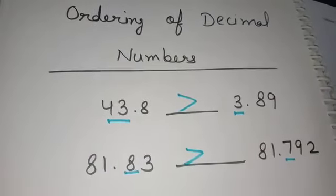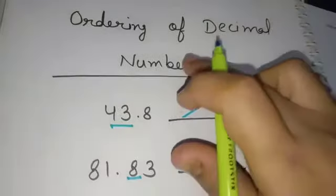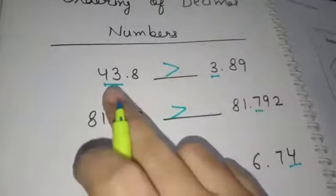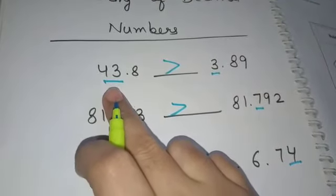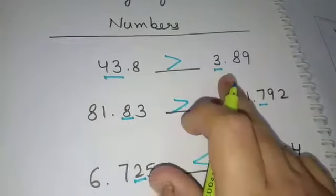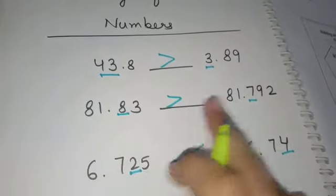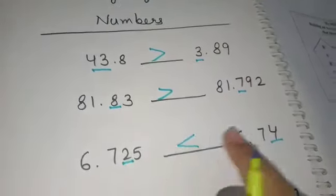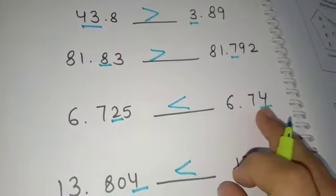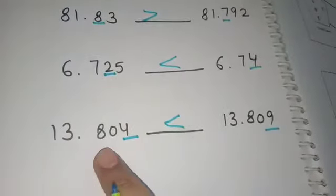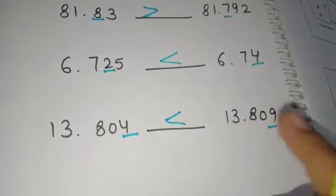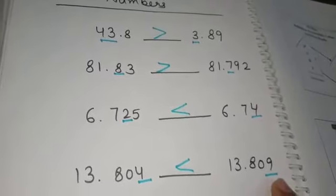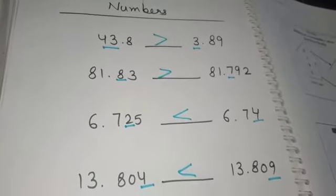In the previous lecture, we learned ordering of decimal numbers — how to compare two decimal numbers. We discussed that firstly we compare the whole number part. If that is same, then compare the tenths place digit. If that is also same, then compare the next digit, meaning the hundredths place. If that is also same, then compare the thousandths place digit. In this way, we do the comparison of decimal numbers.